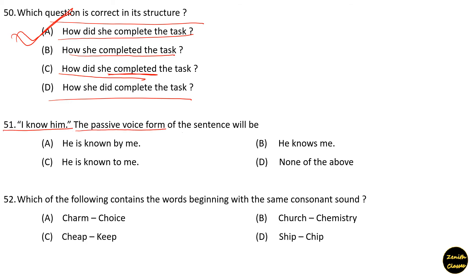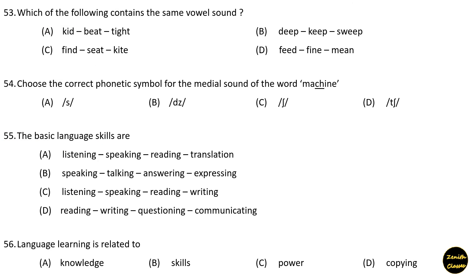Next question: 'I know him' — the passive voice form will be 'He is known to me.' Option C. Next question: Which of the following contains words beginning with the same consonant sound? Option A: charm, choice — option B: church, chemistry — option C: cheap, keep — option D: sip, chip. Option A is the correct answer.